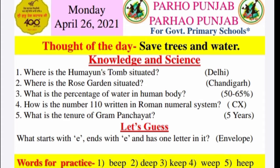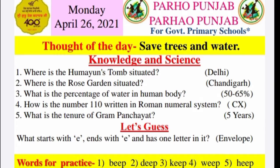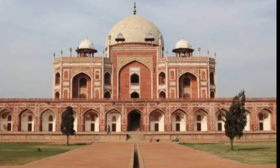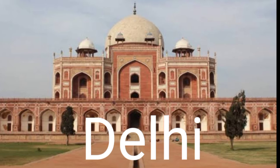Now it's time for questions — questions about knowledge and science. The first question is: where is Humayun's tomb situated? Yaani ki Humayun da maqbara kithe hai? And the answer is Delhi. Eh Dilli vich hai.